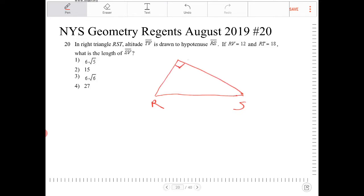And therefore, this T must be the right angle. And TV will form a right angle with the hypotenuse there because it's an altitude.